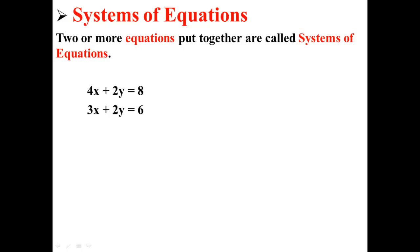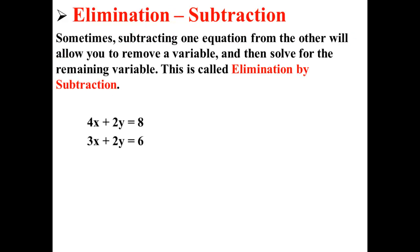Remember that two or more equations put together are called systems of equations. Here we have a system of equations: 4x plus 2y equals 8, and 3x plus 2y is equal to 6. Sometimes, subtracting one equation from the other will allow you to remove a variable and then solve for the remaining variable. This is called elimination by subtraction.